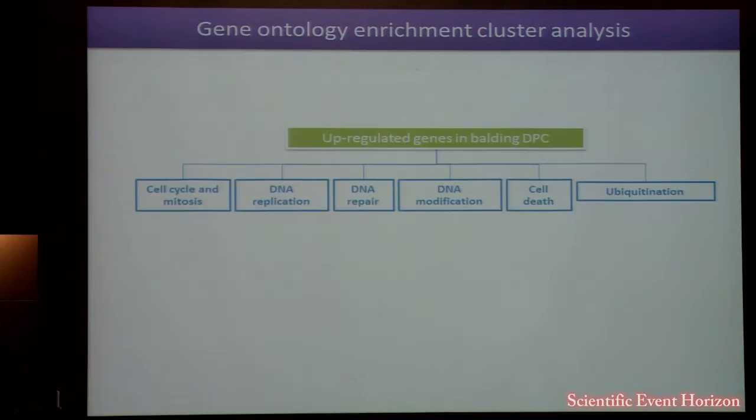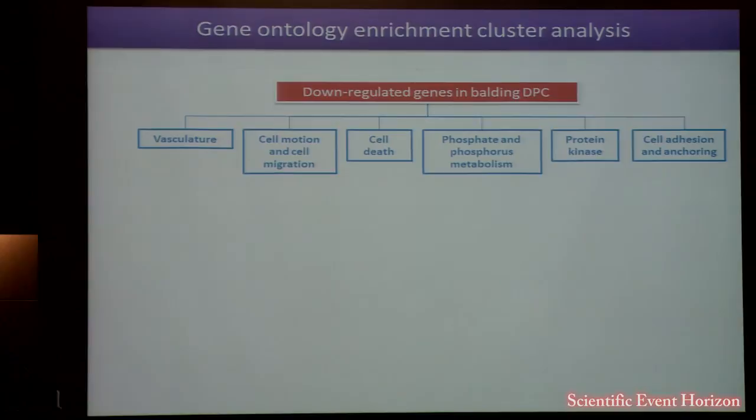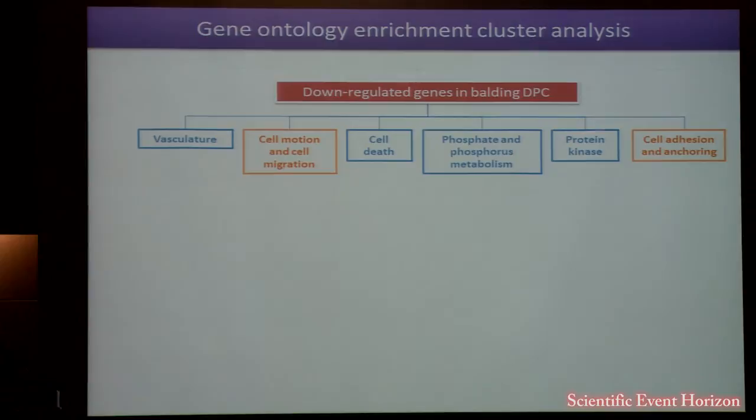Genes down-regulated in balding DPCs compared to non-balding DPCs were highly enriched in clusters related to vasculature, cell motion and cell migration, cell death, phosphate and phosphorus mechanisms, protein kinase, as well as cell adhesion and anchoring.